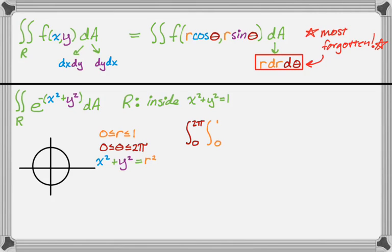So it's going to be 0 to 2 pi, 0 to 1, e to the negative r squared, right? Because I'm going to be replacing x squared plus y squared with r squared. And then dA that we're using contains an r, so it's going to be times r dr d theta.